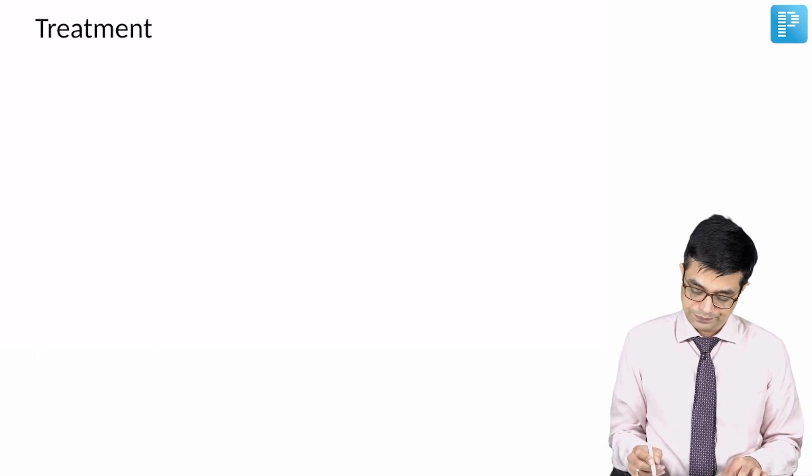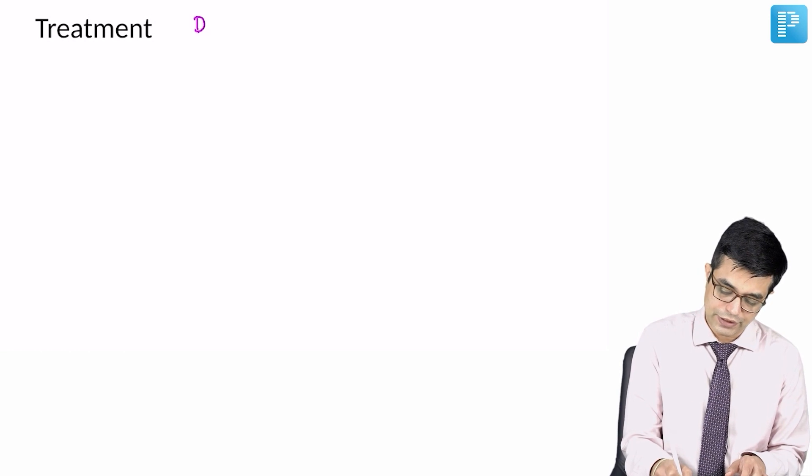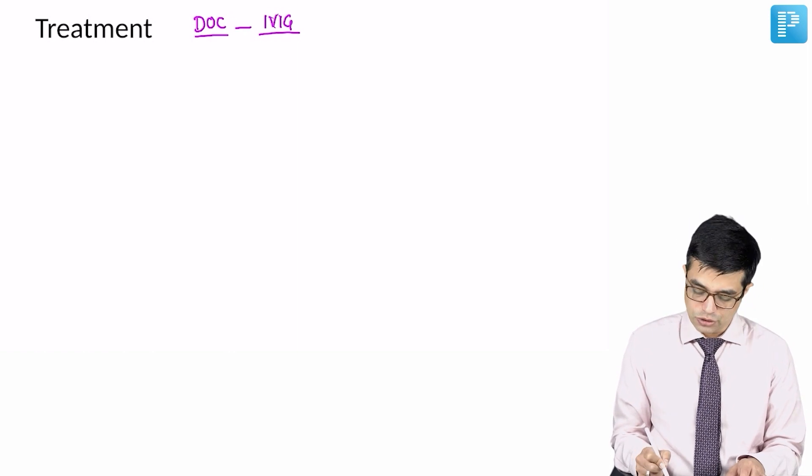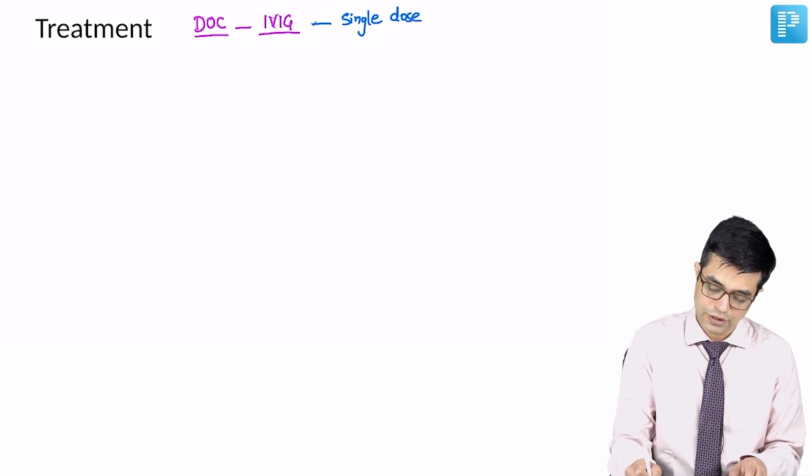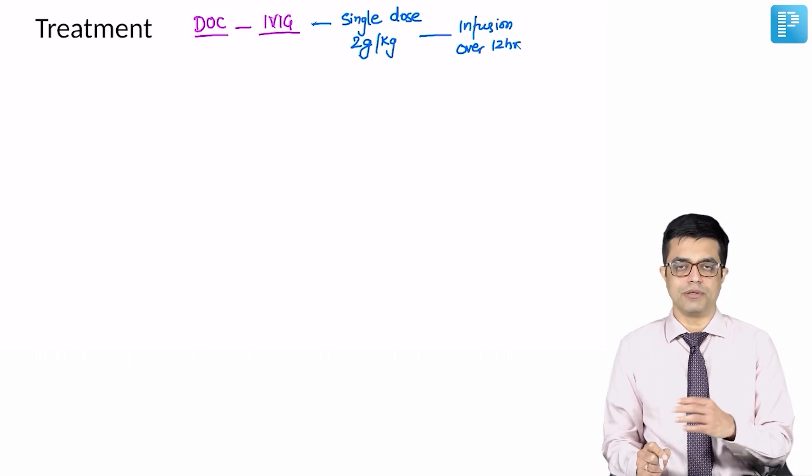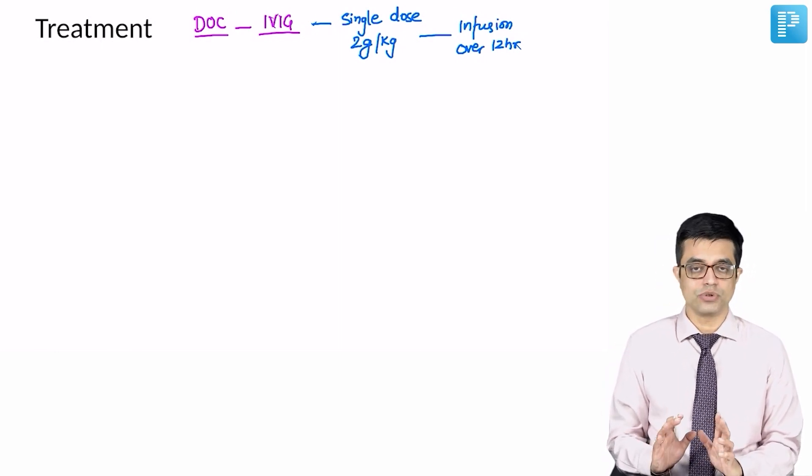Treatment of Kawasaki disease, drug of choice is IVIG. How much IVIG do you give? We give single dose of IVIG in a dose of 2 gram per kg. It is given as infusion which is completed over about 12 hours. Sometimes infusion can be continued up to 24 hours but usually infusion is given over a period of 12 hours. Single dose IVIG.